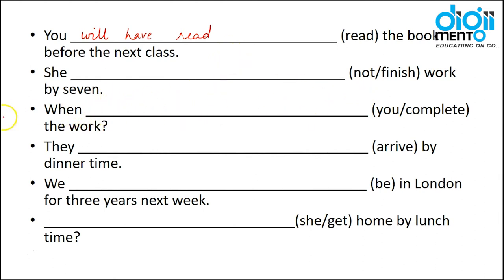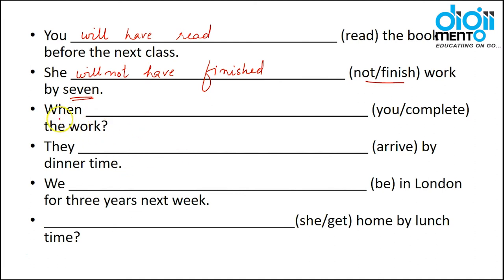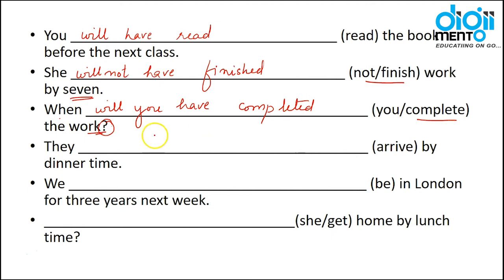'She not finished work by seven' — this is negative, so: 'She will not have finished the work by seven.' Next: 'When you complete the work?' — interrogative, so: 'When will you have completed the work?' The past participle of 'complete' is 'completed'.